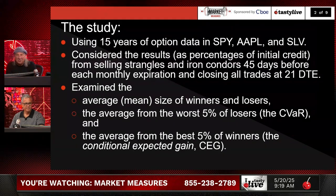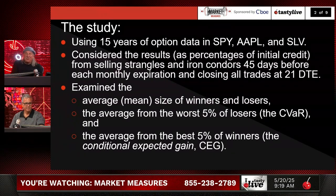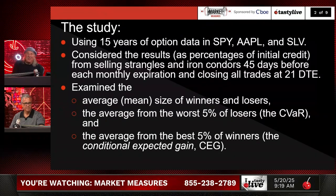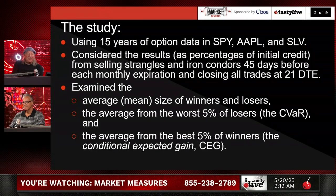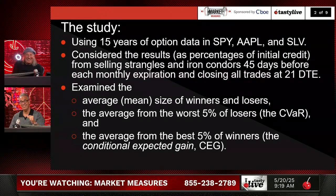We're selling 45 days before each monthly expiration and closing all trades at 21 DTE. We examined the average — the mean size of winners and losers — the average from the worst five percent of losers, and something we haven't used before: the average from the best five percent of winners. We call that CEG, or Conditional Expected Gain.